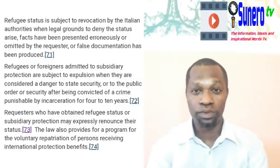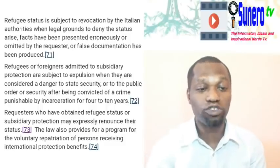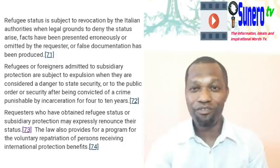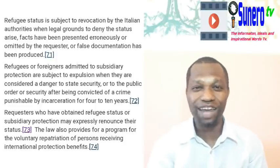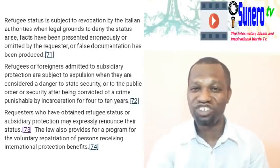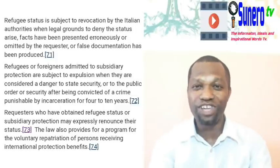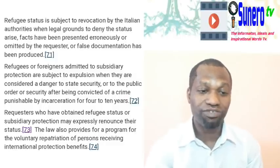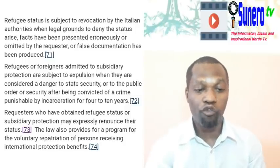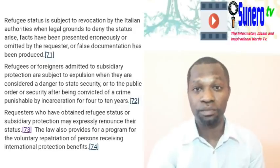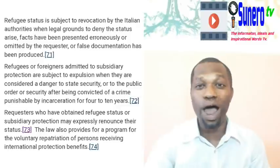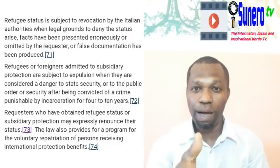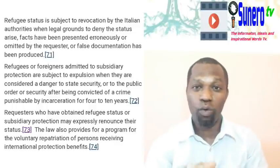Refugees or foreigners admitted to subsidiary protection are subject to expulsion when they are considered a danger to state security. Also, protection can be removed for public order or security reasons after being convicted of a crime punishable by incarceration for four to ten years. So in life, whatever they have given to you, try to protect it and your protection will also be preserved for you.